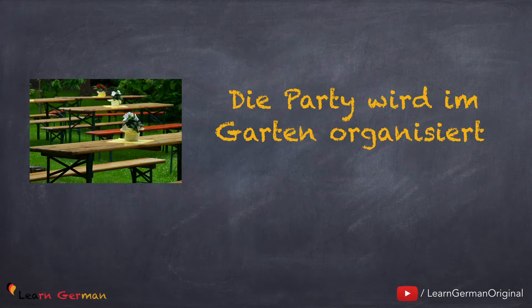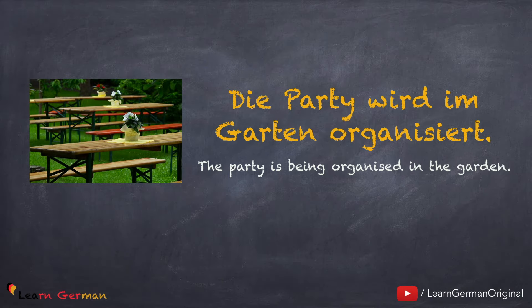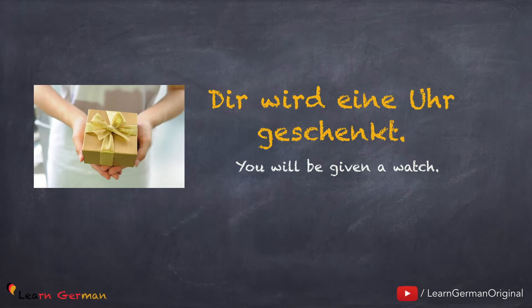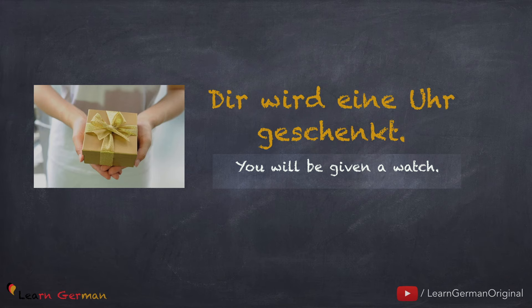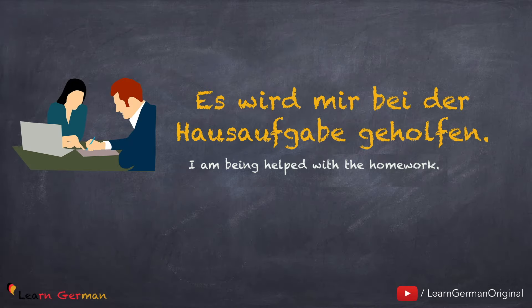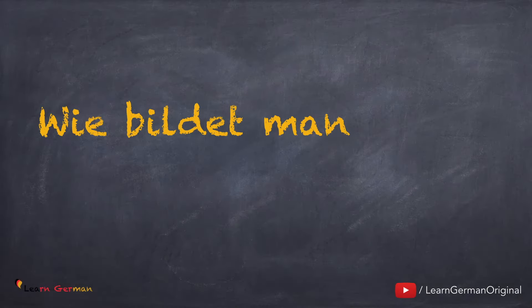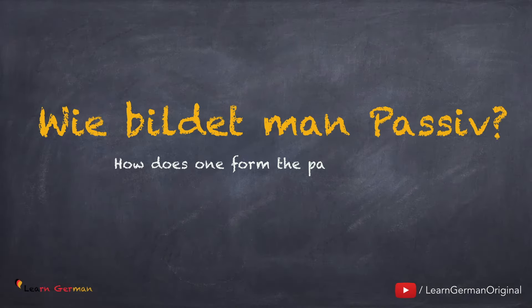Hier sind ein paar Beispiele von Sätzen in Passiv. Die Party wird im Garten organisiert. Der wird einer Uhr geschenkt. Es wird mir bei der Hausaufgabe geholfen.